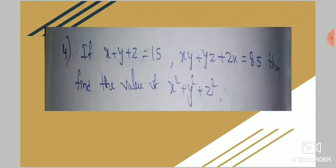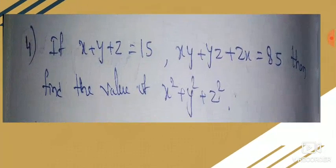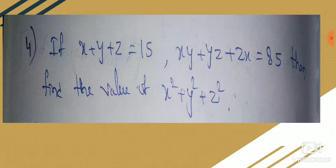Next problem: if xy + yz + zx is equal to 85, find the value of x² + y² + z². Options will be given. It is not necessary to take the options because you need to learn the method of doing the calculation. Whatever you want to do — it is very simple.